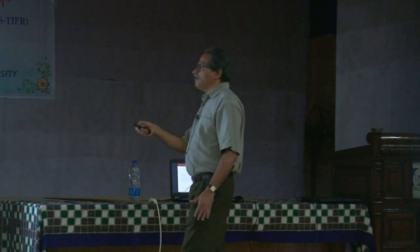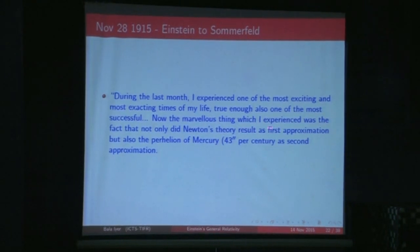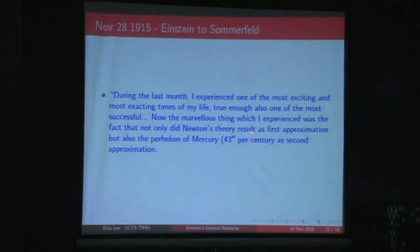After writing these papers, Einstein wrote to Sommerfeld: 'During the last month I experienced one of the most exciting and most exacting times of my life — true enough, also one of the most successful. The marvellous thing I experienced was the fact that not only did Newton's theory result as a first approximation, but also the perihelion of mercury of 43 seconds per century as a second approximation.'